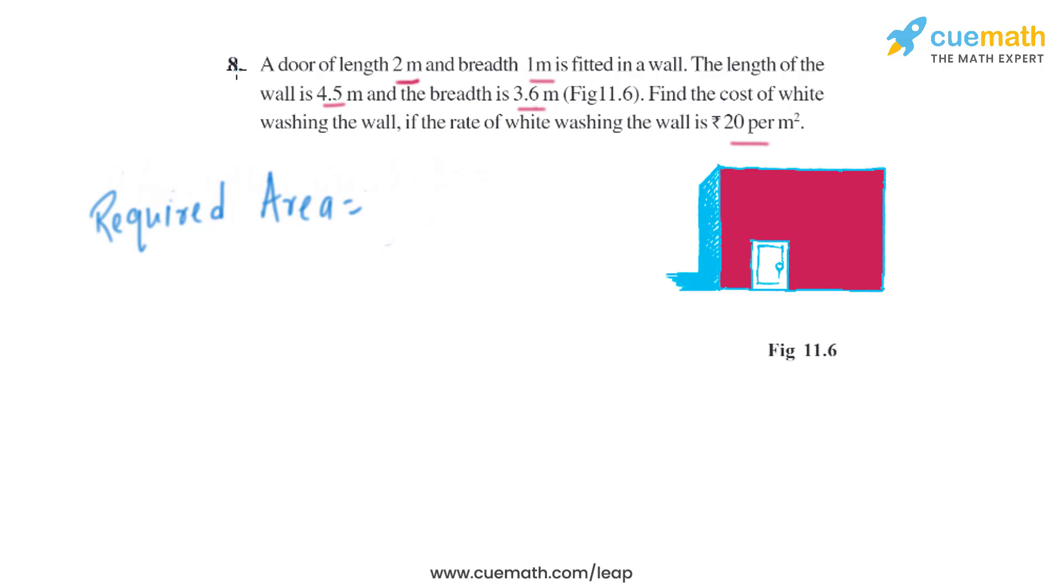Now to find the area to be whitewashed, it's area of wall minus area of door. The area of wall is 16.2 square meters and area of door is 2 square meters, so after subtracting we get 14.2 square meters. That is the area we need to whitewash.